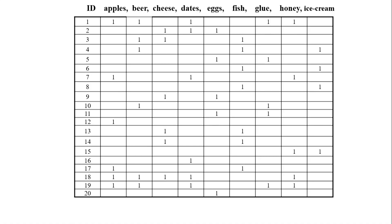Basket data, which is essentially transaction data, looks like this: each row is a transaction ID, and the columns are product names — apple, beer, cheese, dates, eggs, fish, glue, honey, ice cream — certain food items. A blank means that item was not purchased in that transaction, and a '1' means it was purchased.